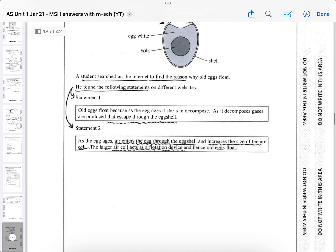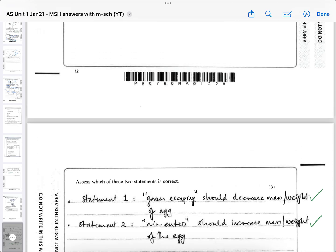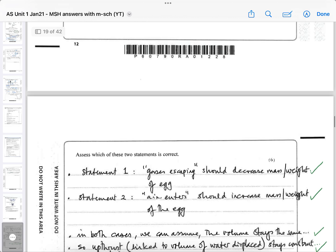Well, they both sound very plausible. But then it says assess which of these statements is correct. Well, statement one is about gases escaping. Well, if gases are escaping, that means you're losing some mass from the inside of the egg. And if statement two, air enters, then that implies that you're adding more mass inside the egg, because basically air will have some mass in it. So we then have to assume in both cases that the volume doesn't change. The volume of the egg stays the same. It doesn't shrink or expand.